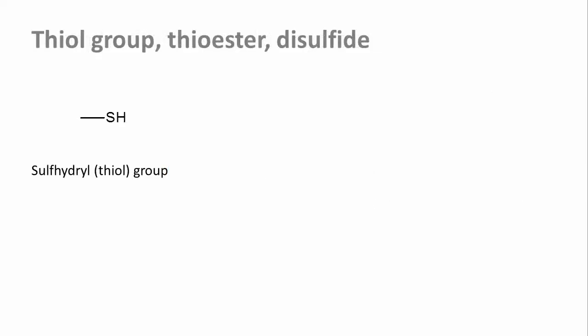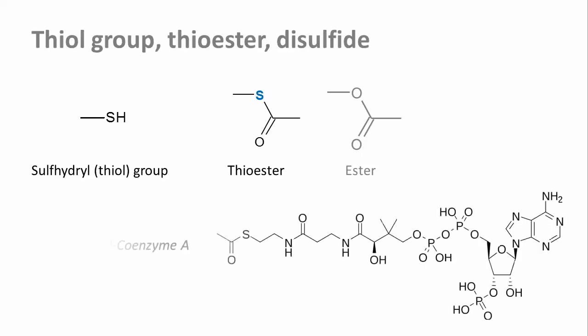Sulfhydryl groups, or thiol groups, do some chemistry that is similar to hydroxyl groups. For example, they can also form esters — the so-called thioesters. One of the most famous ones is acetyl coenzyme A, a hugely important metabolite in the degradation of fatty acids and the biosynthesis of cholesterol and other steroids. But don't worry, you don't have to memorize that structure. The acetyl group here is linked by a thioester bond to the rest of the molecule.